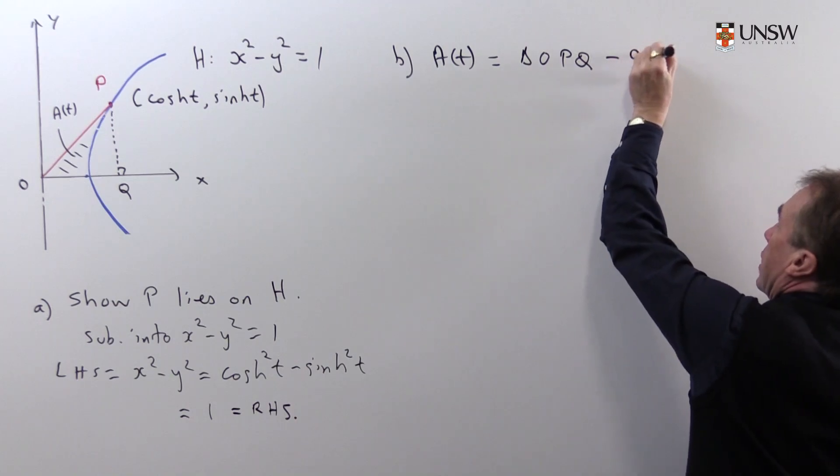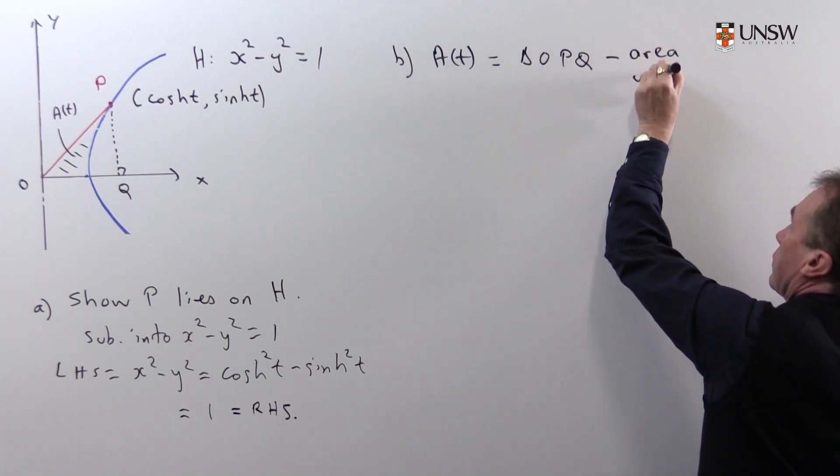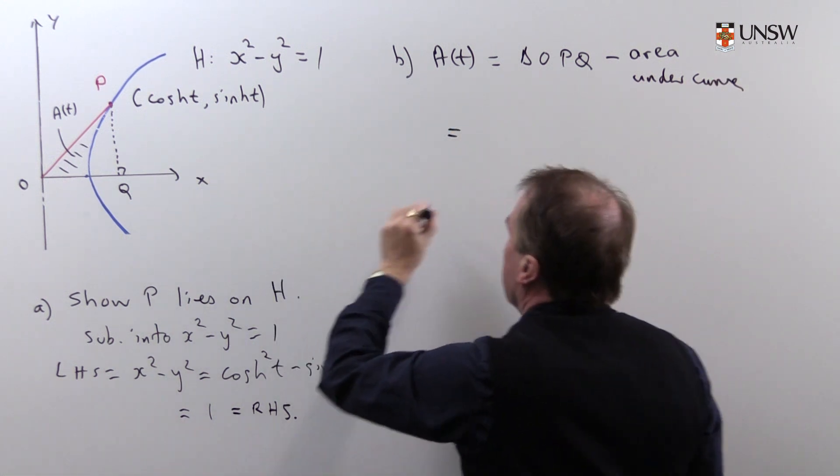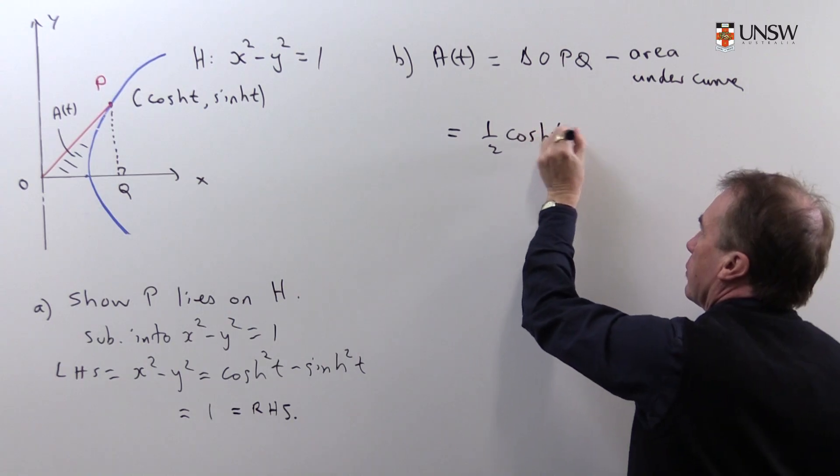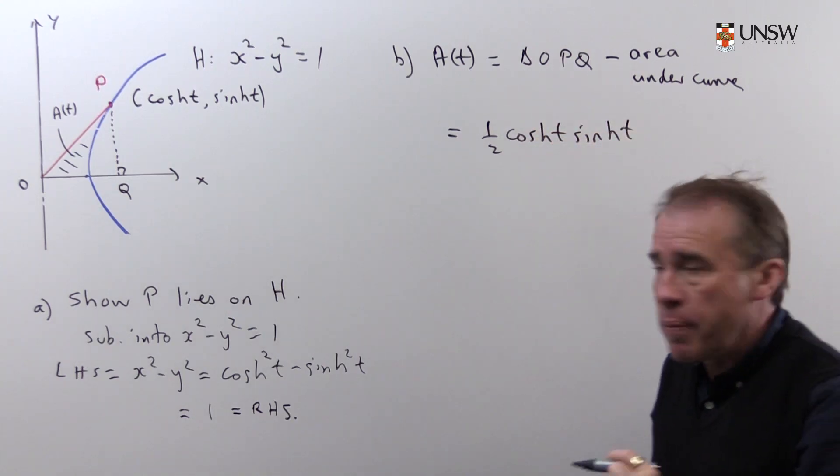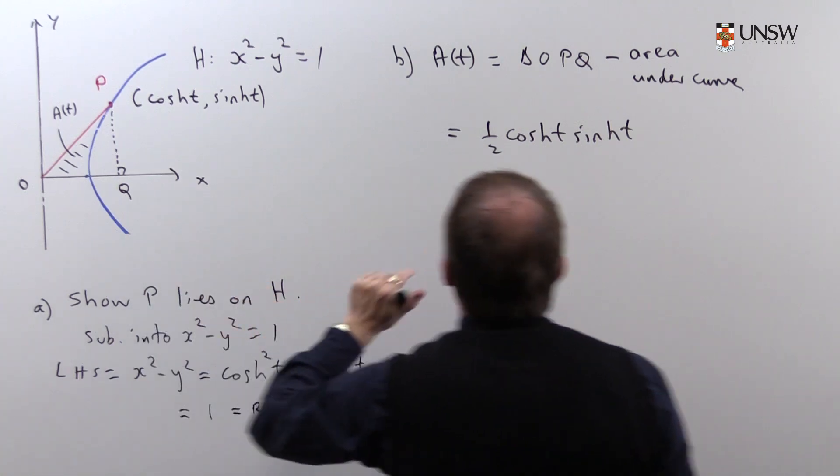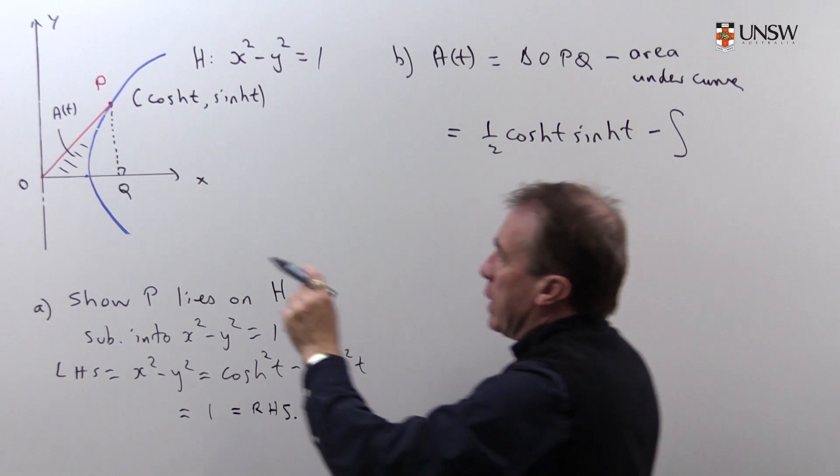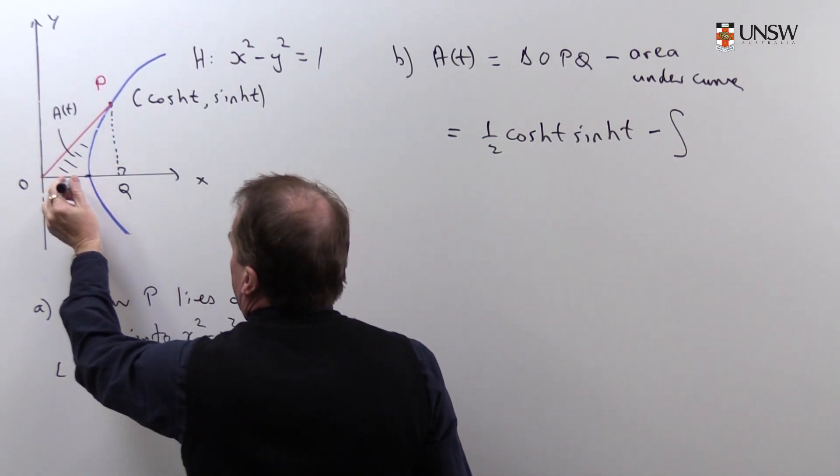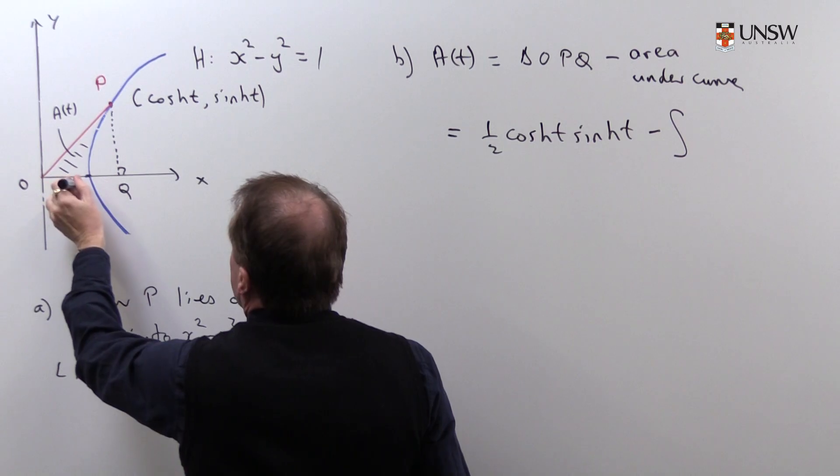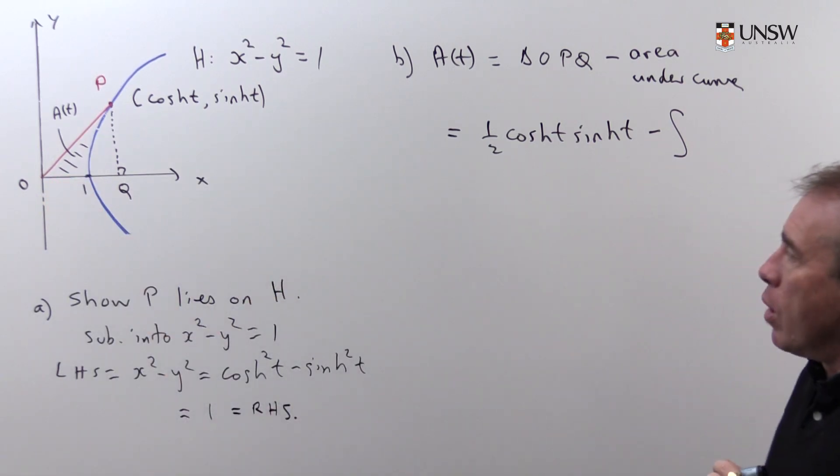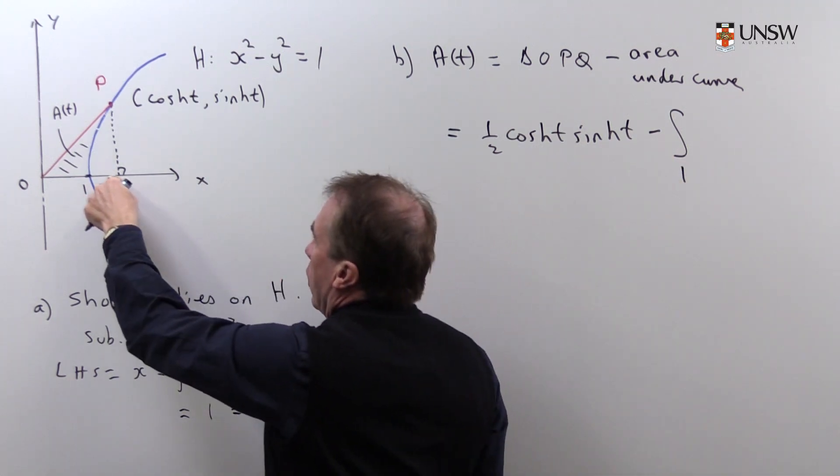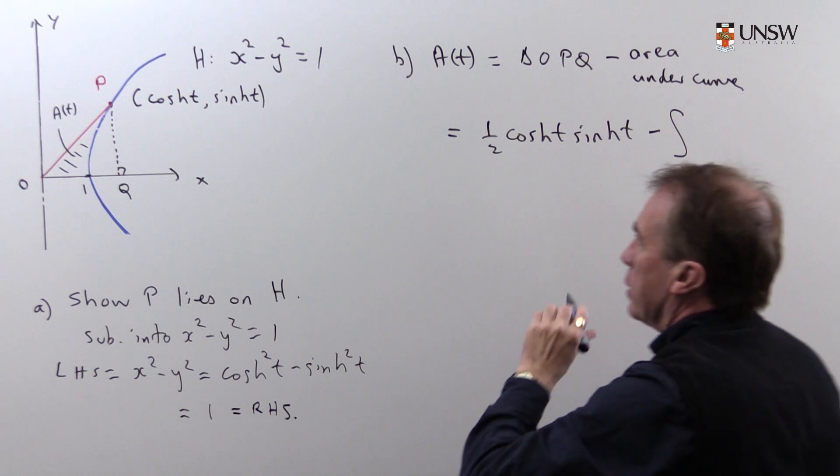So that's going to be minus the area under the curve. And we can calculate that, because this is a triangle, so it's just a half of the base times the height. So that's easy enough. Now the area, well, we're going to do some integration to get the area, so I'm going to subtract off the integral. And I'm going to be integrating from this point here, which is 1. I put y to be 0, I get 1. So integral from 1 up to this point Q, and Q has its x-coordinate, cosh t.